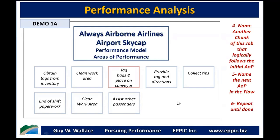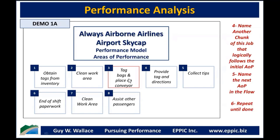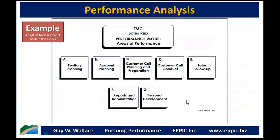I like to get the whole big picture down first, then go to the details, number them in a reasonable logical sequence, and get everybody to agree. What I'm looking for are primary workflows. Tag the bags, give the tag to the customer, give them directions, collect a tip — you're doing those all day long. You're cleaning the work area once or twice a shift. You're obtaining tags from inventory maybe once or twice a shift. At the end of the shift there may be paperwork. And all day long, people ask you things like 'where's Terminal 3?' — that's part of the job too, just being customer-service oriented.